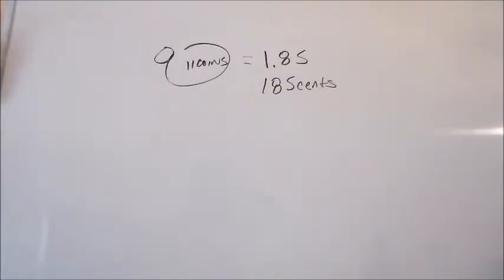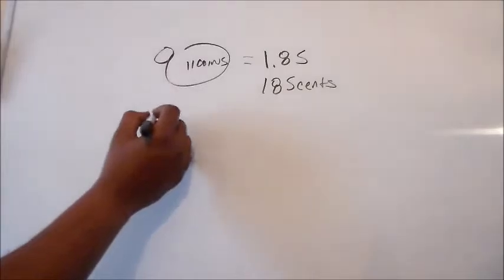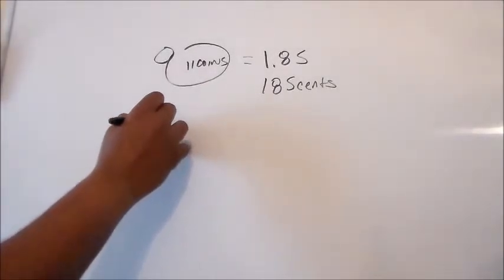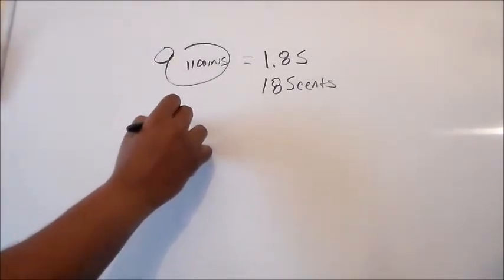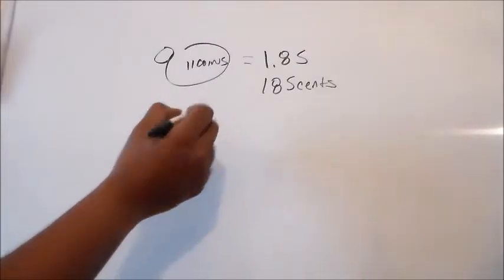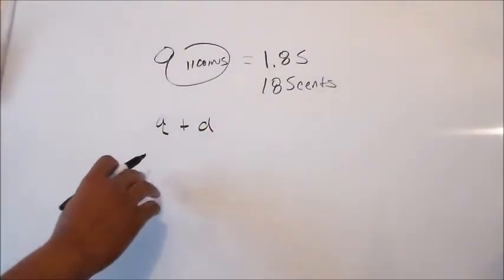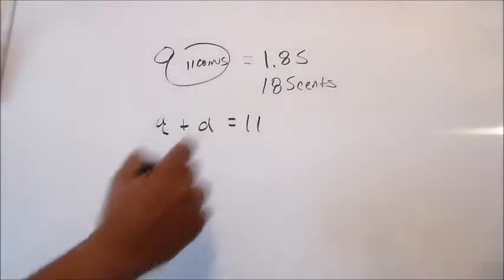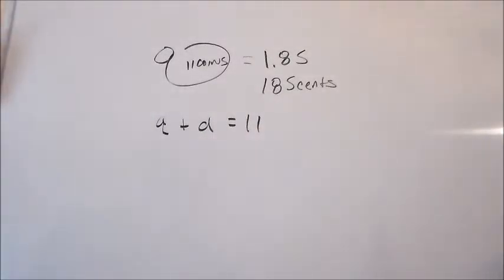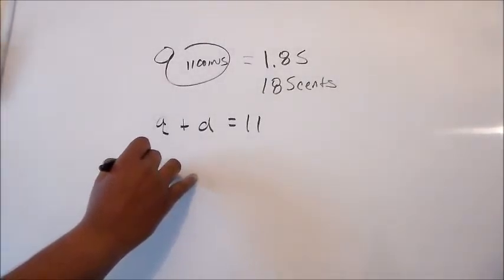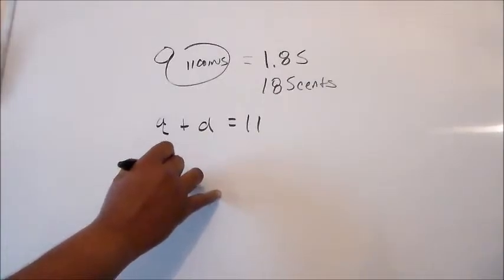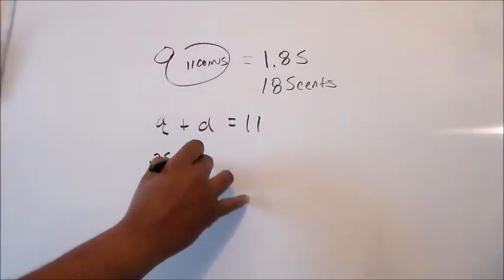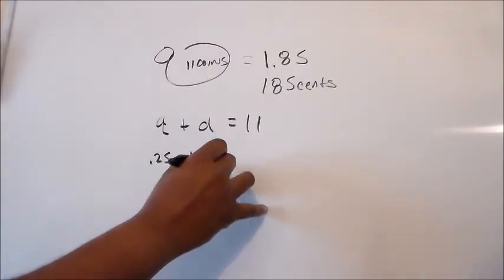But basically what we do is we break down our quarters and dimes as one aspect we have to look at. So quarters plus dimes, we have 11 coins in that situation. And then we're going to assign a value.